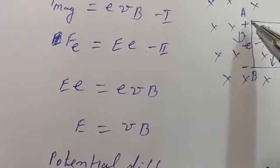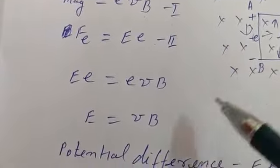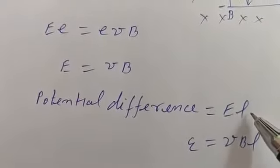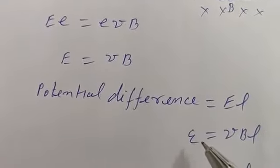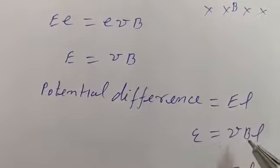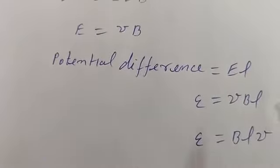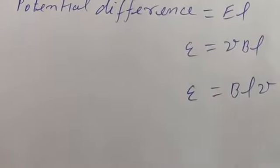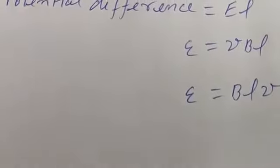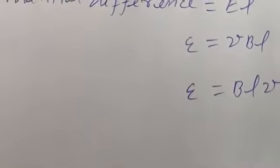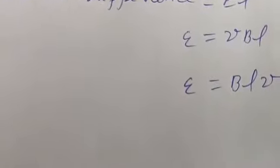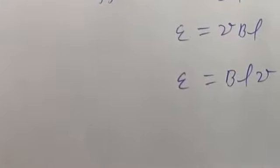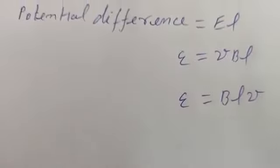It means we know the electric field between A and B, and the length is L. So what will be the potential difference between A and B? The potential difference is electric field multiplied by length. So the potential difference will be VBL, or you can say BLV. That will be the potential difference developed due to this motion. And in the previous lecture as well, we calculated the induced EMF using another method and the result was the same — that will be the induced EMF.